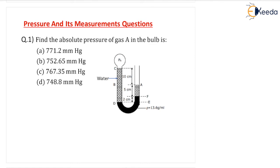The question given here is: find the absolute pressure of gas A in the bulb. We know that absolute pressure is equal to atmospheric pressure plus gauge pressure. So, P_absolute = P_atmospheric + P_gauge.